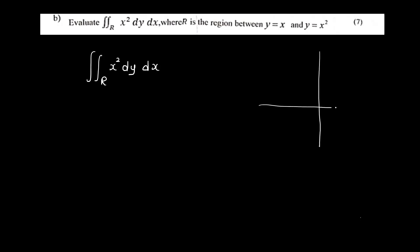Evaluate the double integral of x² dy dx, where R is the region between y = x and y = x². We have the region of y = x and y = x². This region has y = x² as a parabola and y = x as a straight line.